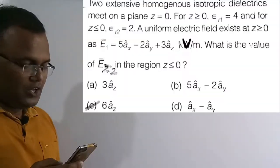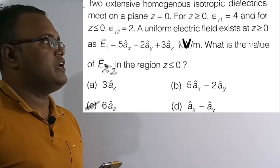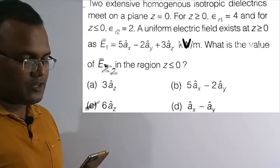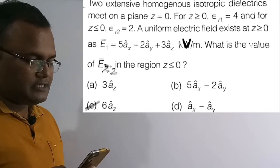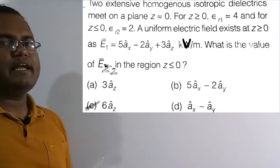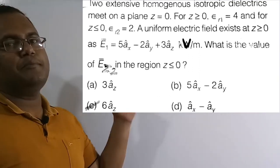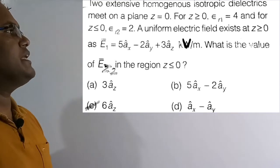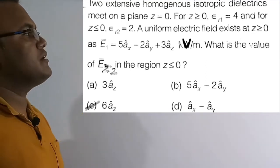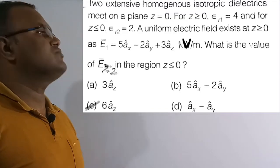Now we solve the 54th question. Two extensive homogeneous isotropic dielectrics meet on a plane z equals 0. For z ≥ 0, epsilon_r1 equals 4; for z ≤ 0, epsilon_r2 equals 2. A uniform electric field E1 exists at z ≥ 0. What is the value of E_z2 in the region z ≤ 0? Option C, which is 6 a_z cap, is the correct solution.